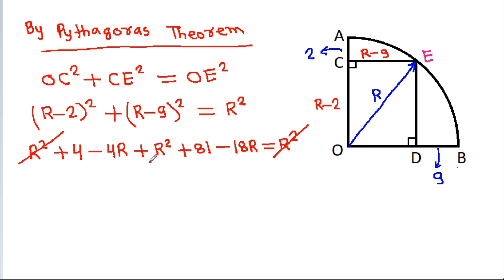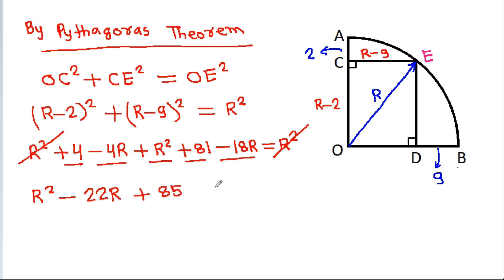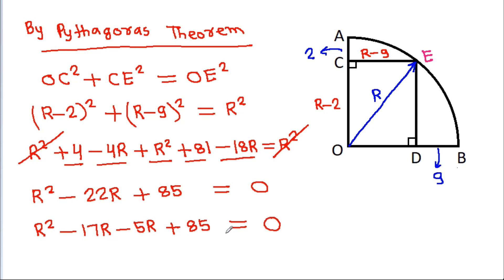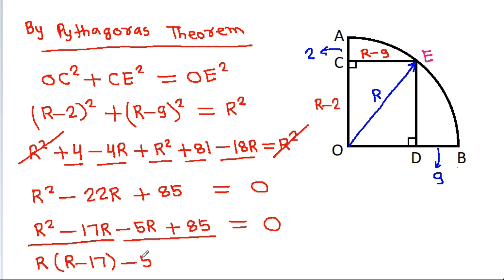The R² terms simplify: R² minus 22R plus 85 equals 0. Factoring this quadratic gives R² minus 17R minus 5R plus 85 equals 0.